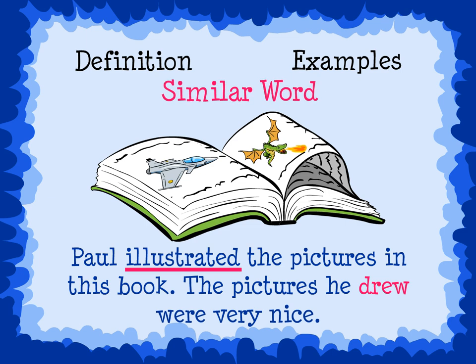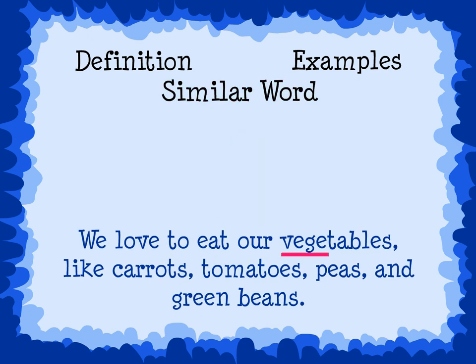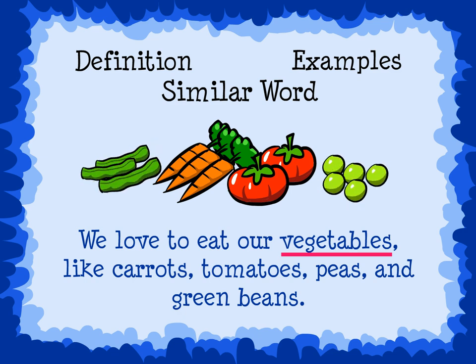And here is the final example: we love to eat our vegetables, like carrots, tomatoes, peas, and green beans. I think the word vegetables means something healthy that we eat, like carrots, tomatoes, peas, and green beans. The context clues gave us examples.